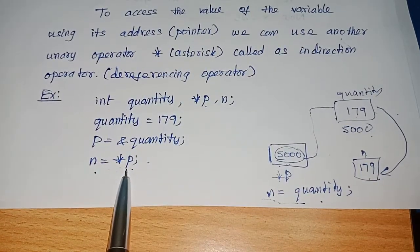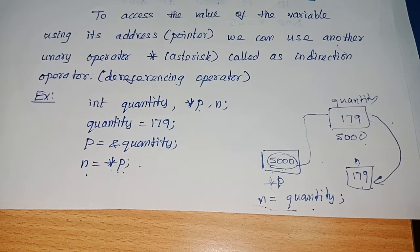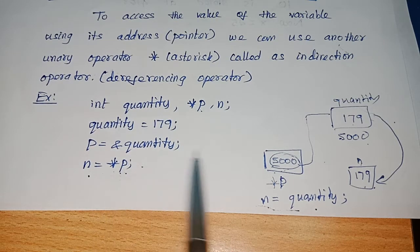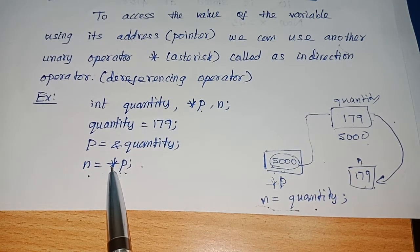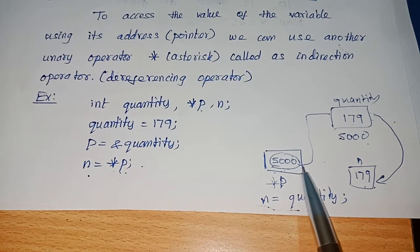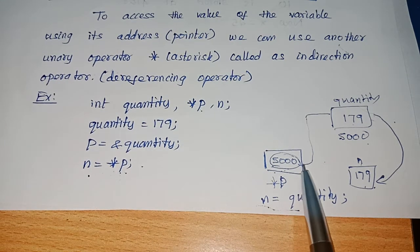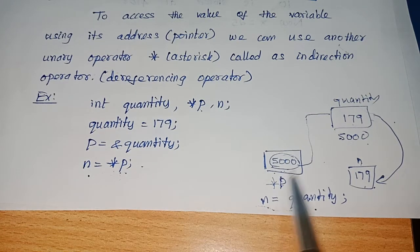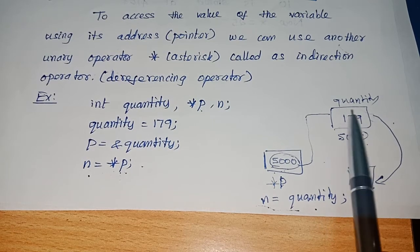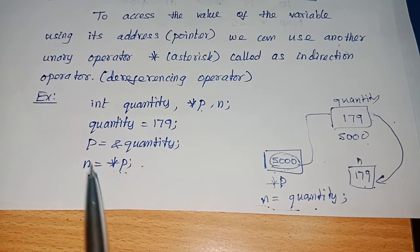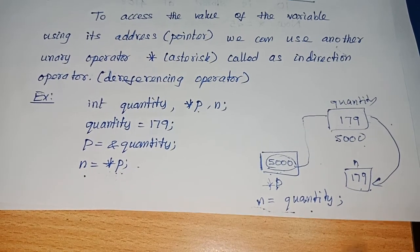Whenever star p is not in the declaration part, it is the dereferencing operator. The compiler goes to p, which contains the address of variable quantity, collects the address, and the star represents dereferencing — going back to that address. It informs the compiler to collect the address from p, move back to that address, collect the value, and store it in n. So star p gets the value 179 and it is assigned to n — n will now be 179. This is called accessing a variable through the pointer.